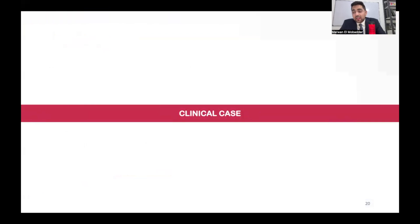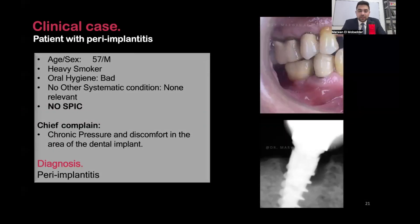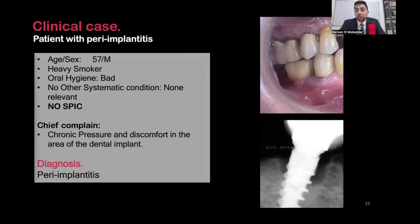I will now summarize everything with a clinical case. This patient was referred to me recently by my father, who is an endodontist. In 2017, he referred the patient to a surgeon who placed an implant. When the patient came to me recently, he was a heavy smoker with very bad oral hygiene and no systemic conditions. From 2017 until today there was no supportive peri-implant care. His chief complaint was chronic pressure and discomfort in the area of the implant. My diagnosis was peri-implantitis.